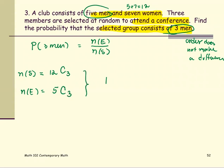So the probability of choosing or selecting three men to attend a conference would be 5 combination 3 divided by 12 combination 3. And put in a calculator to get this number for us.